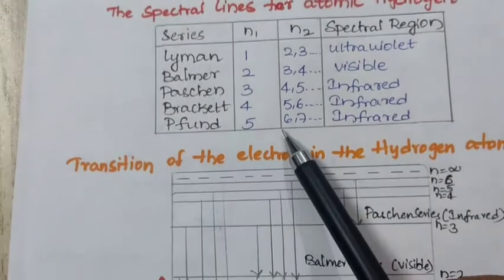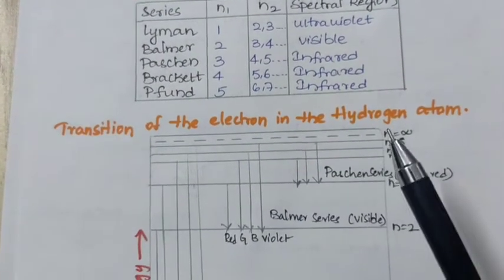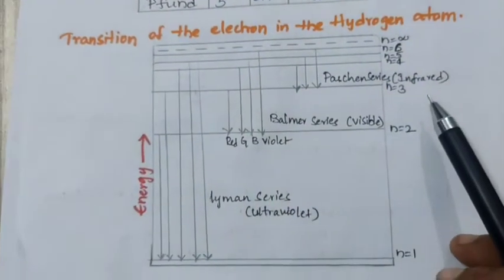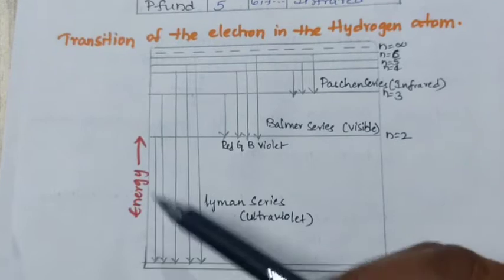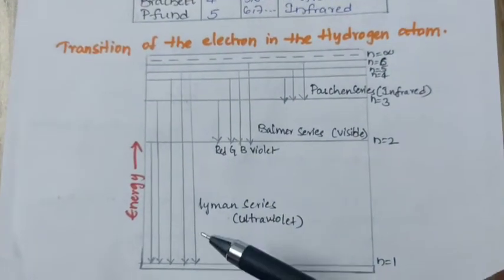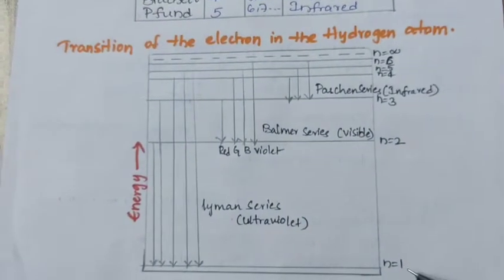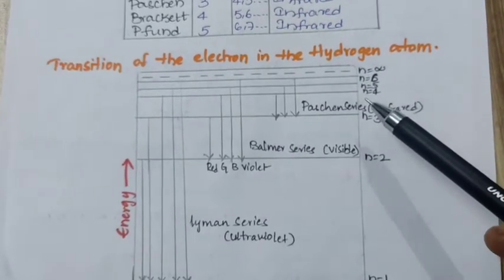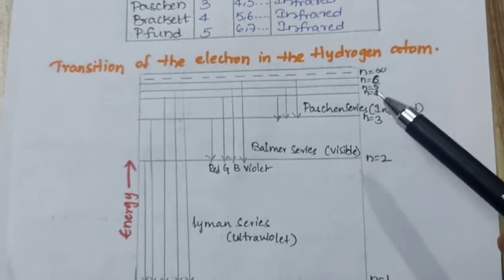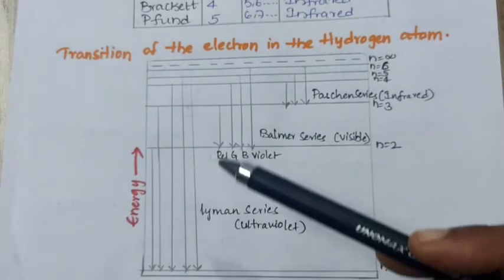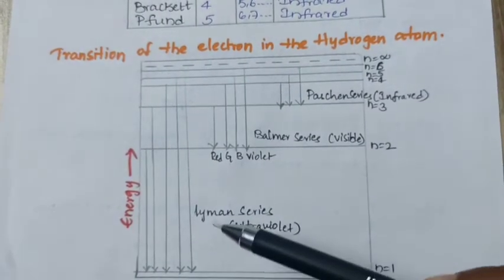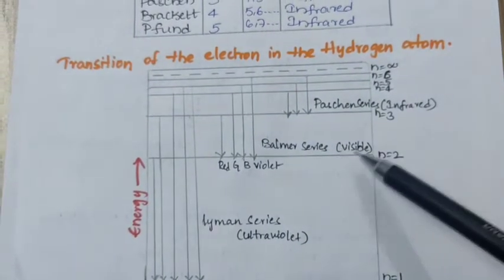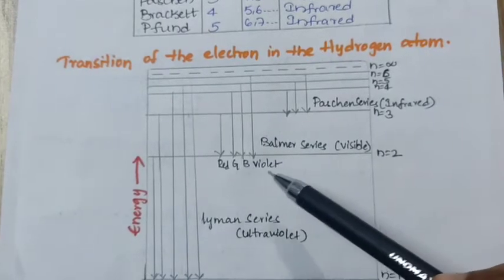Next, we will see the transition of the electron in the hydrogen atom. Now, we will see all this series for the hydrogen atom. This is the energy increasing. N1 is equal to 1, N2 is equal to 2, N is equal to 3, N4, 5, 6. We will see the series, Lyman series in the UV region and Balmer series in the visible region. Visible region is nothing but VIBGYOR.